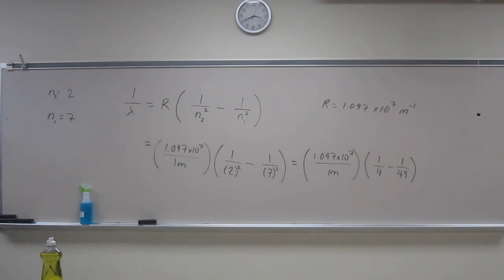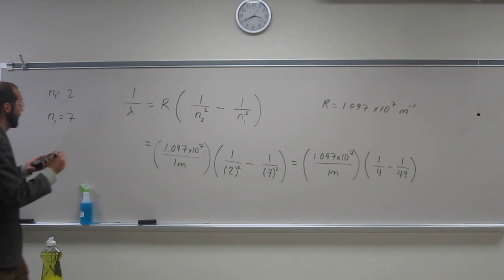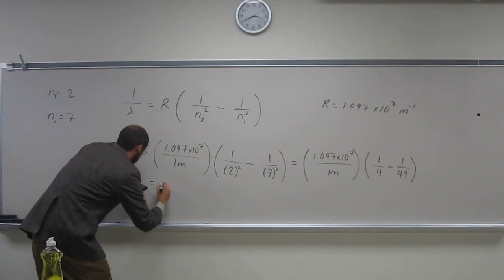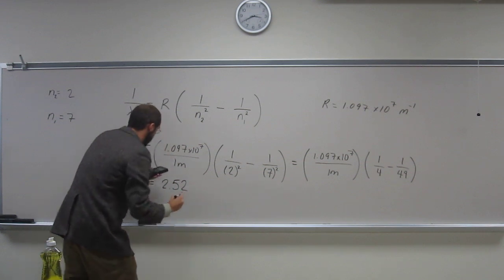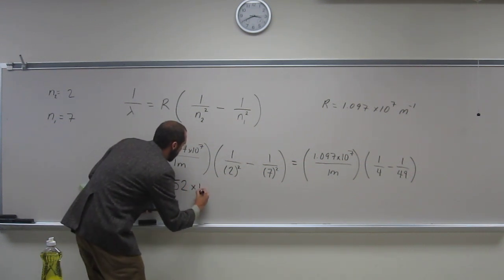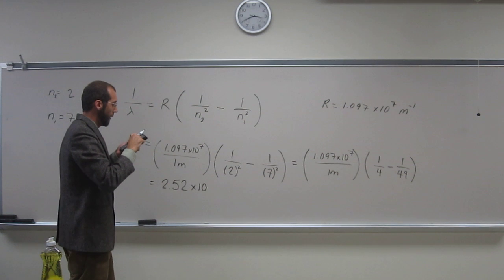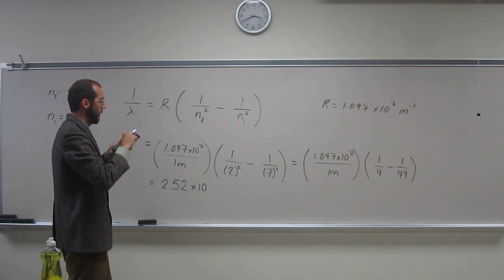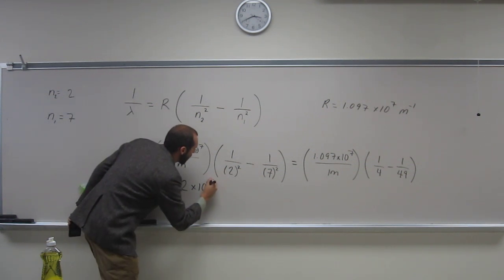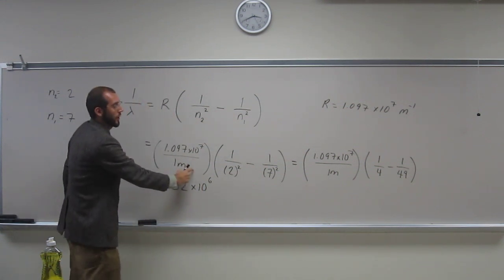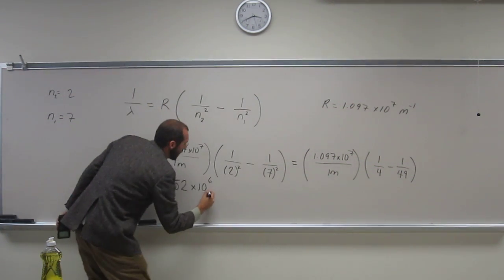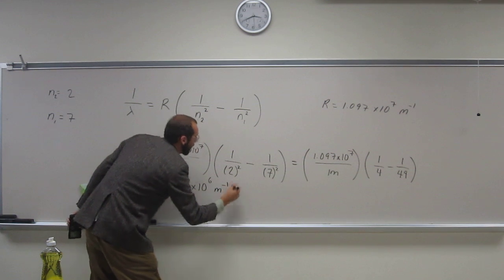So when I do that, I get this answer: 2.52 times 10 to the 6. And notice, the meters is still down here, right? So it's still per meter, like that.